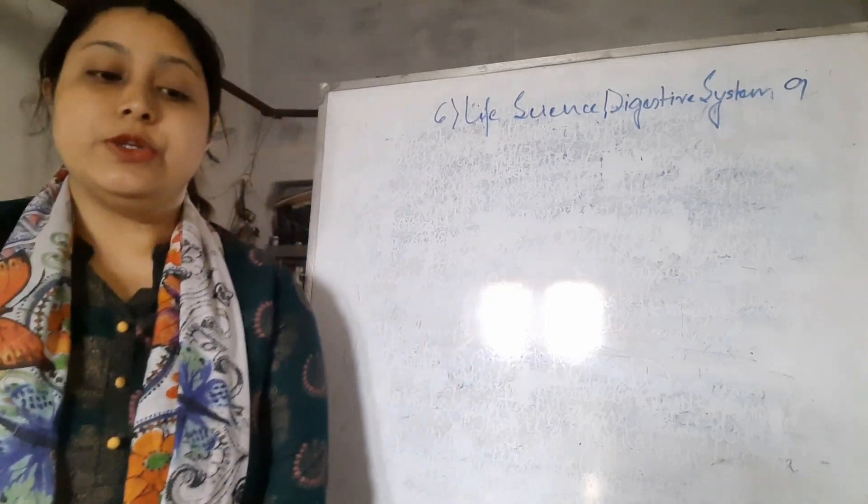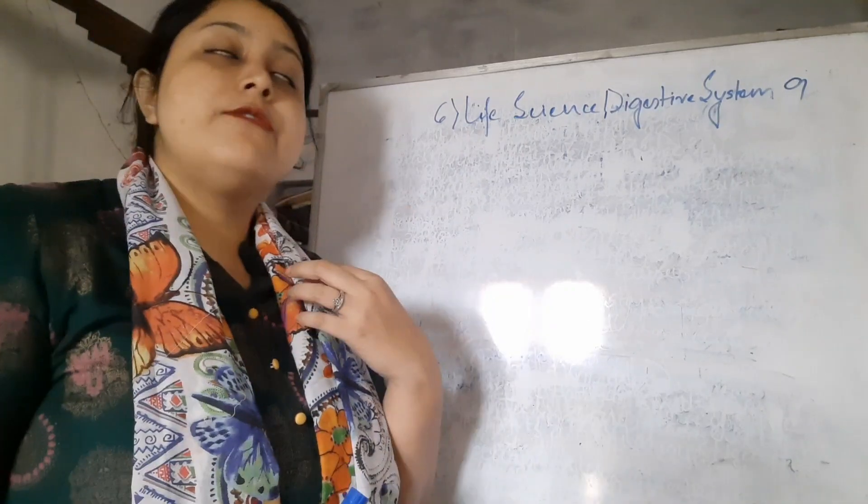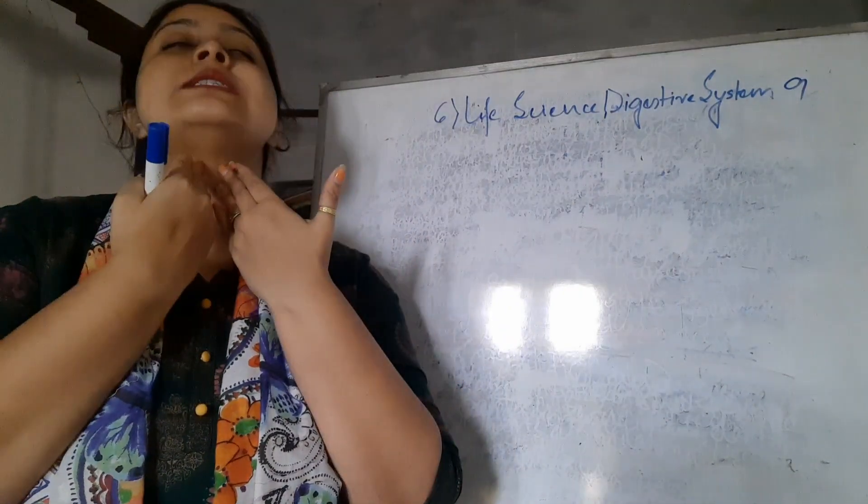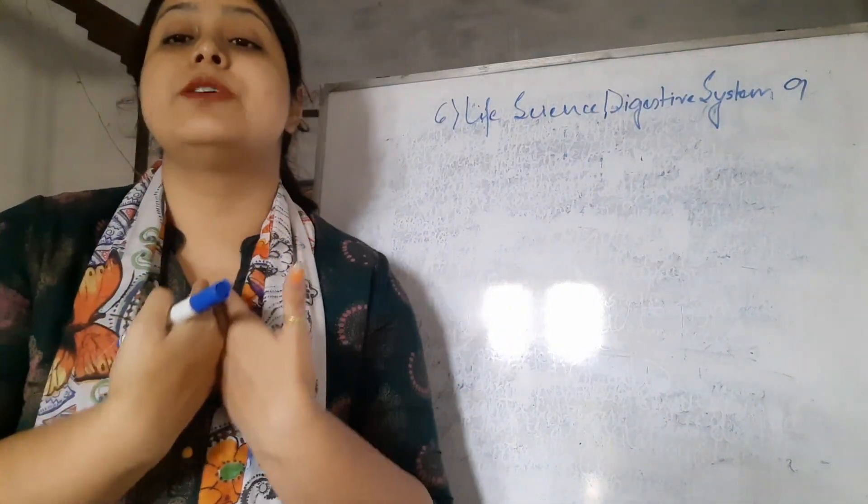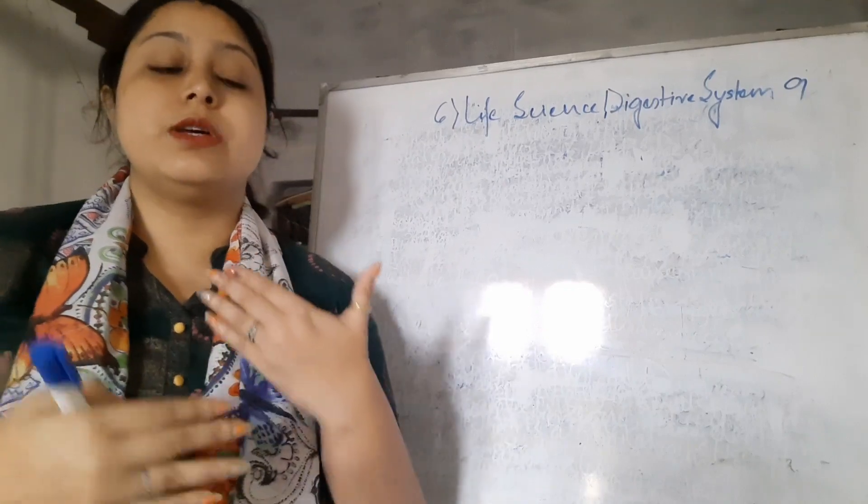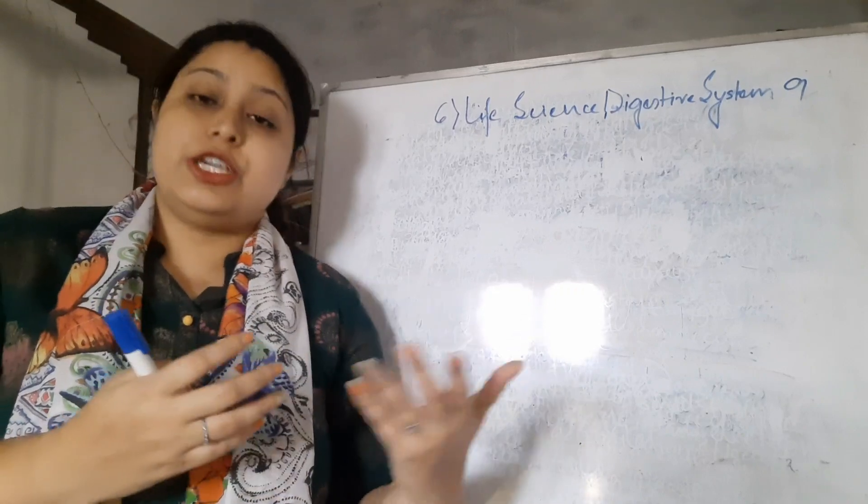In the previous video we discussed all of the digestion procedures. When we consume food it comes into our mouth, then goes to the pharynx and esophagus, and after that comes to our stomach. Further digestion happens after the stomach. It goes to the small intestine where absorption starts and some digestion obviously happens.